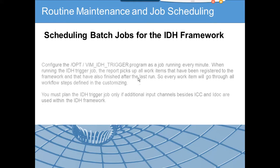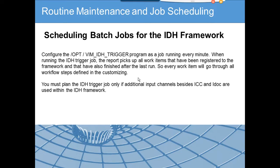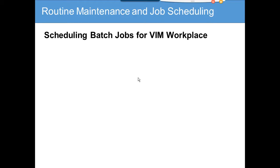The IDH trigger program has a job running every minute — this is very important. This program changes the different statuses of all document processing: a document comes in as scanned, then moves to document register, then becomes scanned, then extraction completed, then ready for validation — all these status changes are triggered through this background job.